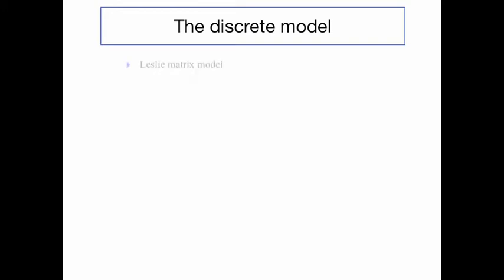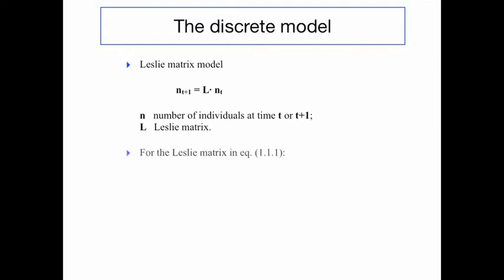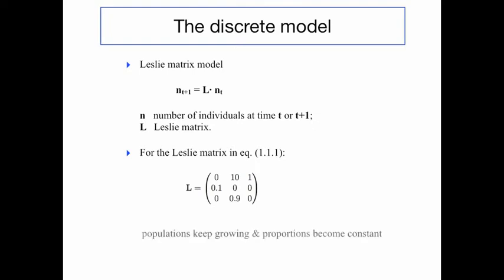Let's look at the discrete time dynamic model. The Leslie matrix model looks like this as written as an equation, where n on the left side of the equation refers to the number of individuals at time t plus 1. So it's related to the number of individuals at time t via the Leslie matrix. From numerical simulations with specific values from the textbook, this model shows that as time goes by all populations will keep growing, but the population proportions of each population will become constant.